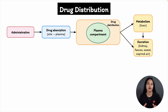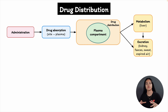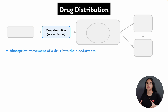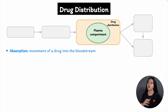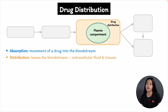In this video we're going to cover drug distribution. If you've seen the introduction to pharmacokinetics lecture, we went through an overview of the four important processes, ADME. In the previous lecture we discussed drug absorption, which is the process by which a drug enters the bloodstream from its site of administration. Once the drug enters the bloodstream, it's distributed throughout the body to its target tissues. So drug distribution is the process by which a drug exits the bloodstream and enters the extracellular fluid and tissues.